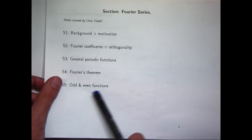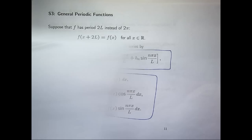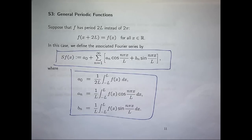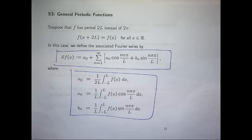We're going to look at odd and even functions and see how the simplifications for these Fourier coefficients occur. Students tend to like this because in many cases, if you have special functions, you don't need to calculate three things — a₀, aₙ, and bₙ — you may only need to calculate one. So it's a good time-saving technique if possible.